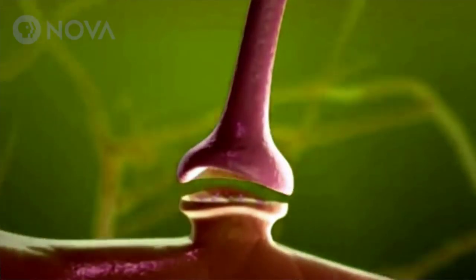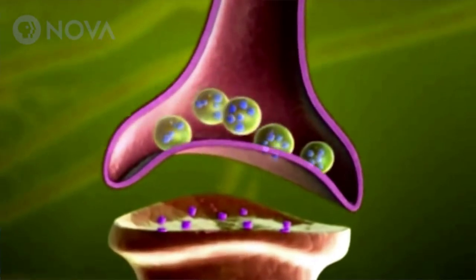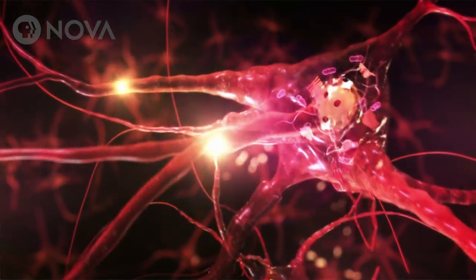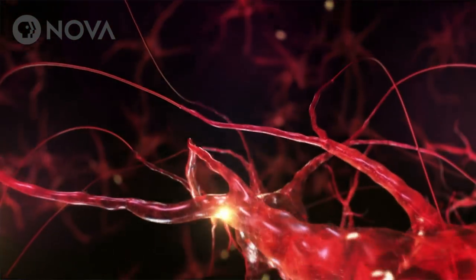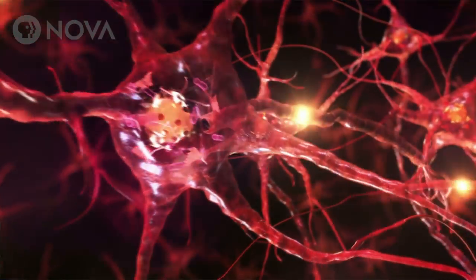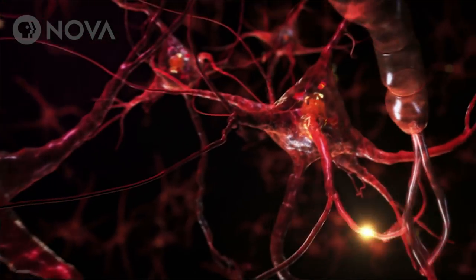An electrical signal travels down one neuron over a small gap to the next neuron, and that signal continues along the neurons until all the neurons that are related to that one memory have been triggered.